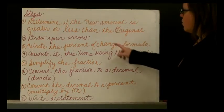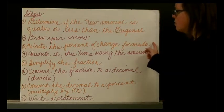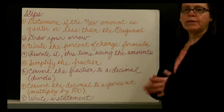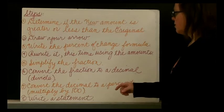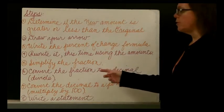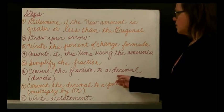After you draw your arrow, what you're going to do is write the percentage change formula. After that, we'll rewrite the formula, but this time plugging in the amounts that we're going to be working with. Once we have subtracted our numerator and we are going to simplify our fraction, then we're going to convert the fraction to a decimal by dividing.